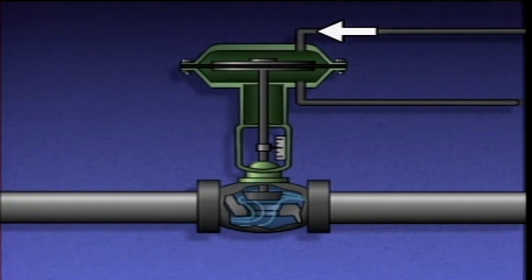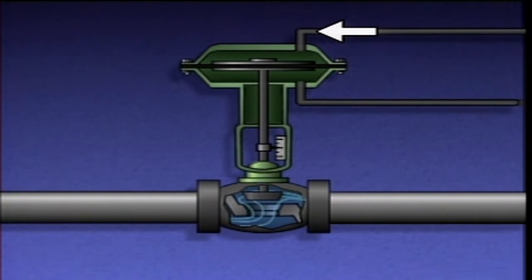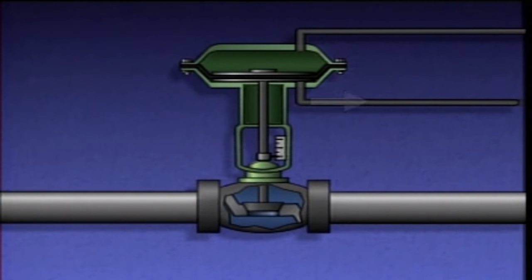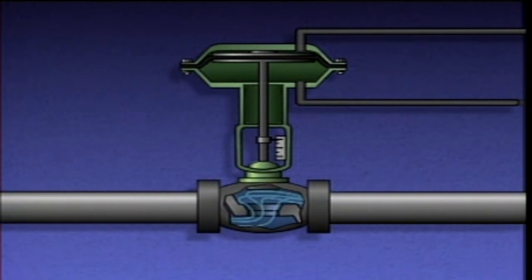When air pressure is applied to the upper chamber, the diaphragm and the actuator stem are pushed downward and the valve closes. Air in the lower chamber is exhausted through the lower air supply port. When air pressure is applied to the lower chamber, the diaphragm and the stem are pushed upward and the valve opens.